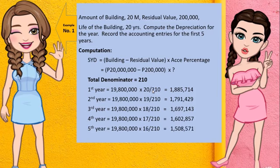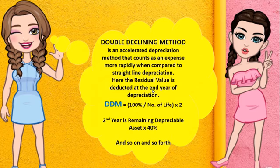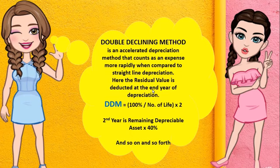For the Double Declining Method, it is an accelerated depreciation method that counts as an expense more rapidly when compared to Straight Line Depreciation. Here, the residual value is deducted at the end of the depreciation. The formula is 100% divided by the number of years of life, which is 20, multiplied by 2. So the answer here is 10%.